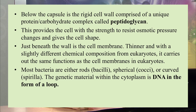Just beneath the cell wall is the cell membrane, which is thinner and slightly different in chemical composition from the eukaryotic cell membrane, but carries out the same functions. In bacteria and other prokaryotic cells, the DNA is found in the form of a loop in the cytoplasm.